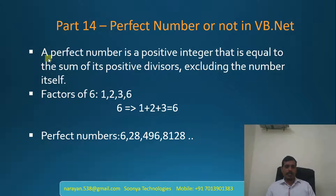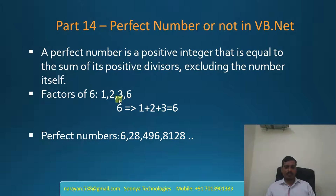What is a perfect number? A perfect number is a positive integer that is equal to the sum of its positive divisors, excluding the number itself. For example, the factors of 6 are 1, 2, 3, and 6. We need to sum all the factors excluding 6, that means 1 plus 2 plus 3 equals 6. Since 6 equals 6, so 6 is a perfect number.